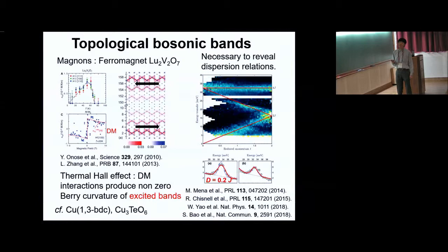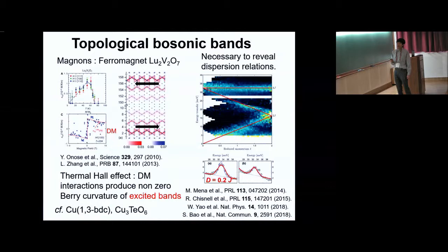For example, I show the inelastic neutron scattering spectrum for this compound. From the analysis, it is shown that DM interactions are indeed present, and their magnitude is estimated at almost 20% of the nearest-neighbor exchange interaction. The same kinds of topological bosonic bands are also discussed in the kagome ferromagnet and a three-dimensional antiferromagnet, which was discussed in the previous talk.